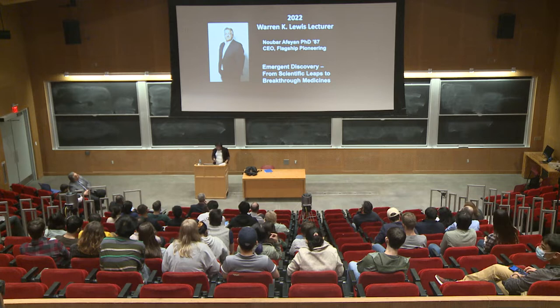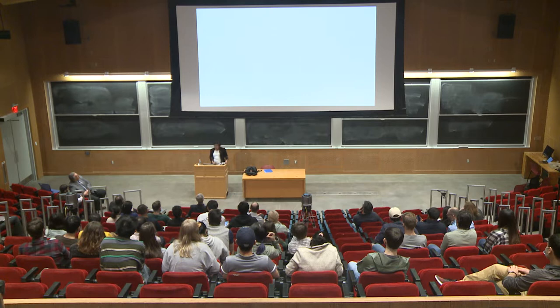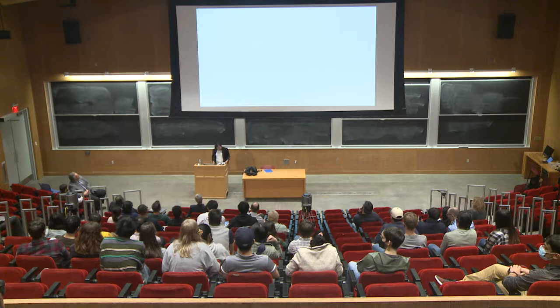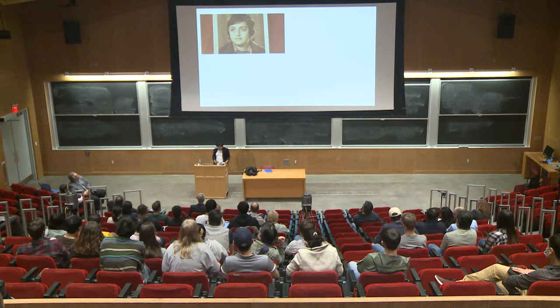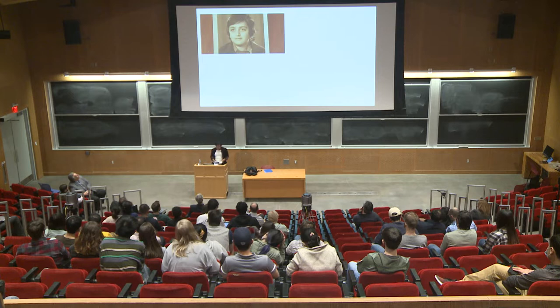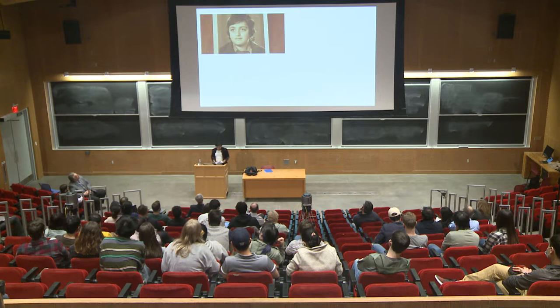I've had the pleasure of introducing Noubar multiple times, and I always use the same pictures, so I decided to mix things up because he has such an interesting life. Noubar was born in Beirut to Armenian parents in 1962. He and his family moved to Canada, and his undergraduate work was at McGill University in Montreal. Ultimately, Noubar came to MIT ChemE and completed his PhD in biochemical engineering in 1987.